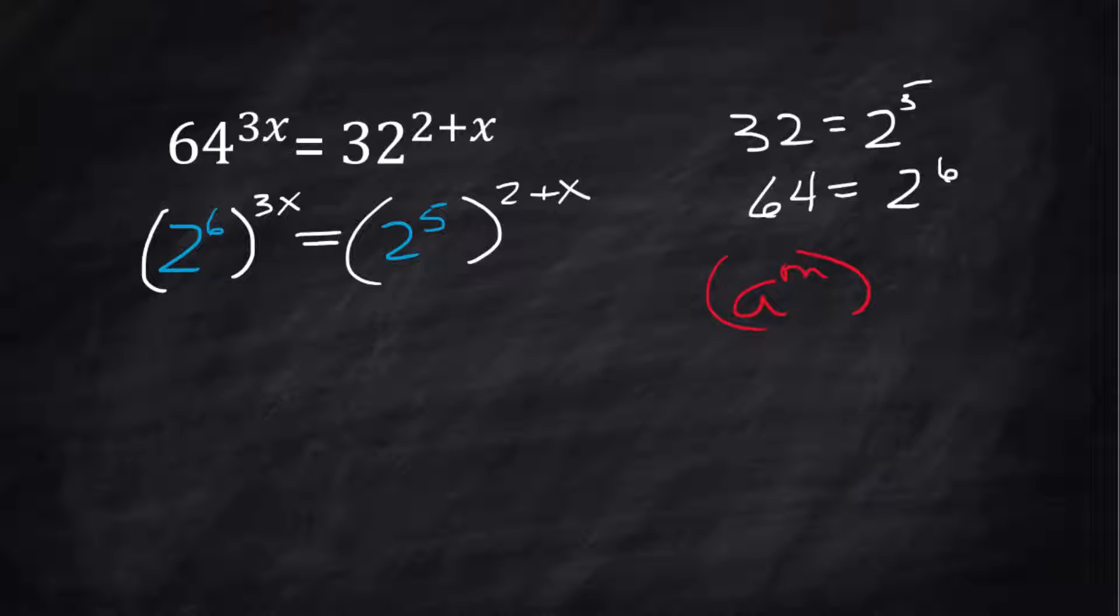To simplify this, you multiply the powers using the power rule. If you have an exponent raised to a power, we multiply those exponents. 2^6 raised to 3x is 18x. 2^5 raised to 2x, with distributive property, is 2^(10 + 5x).